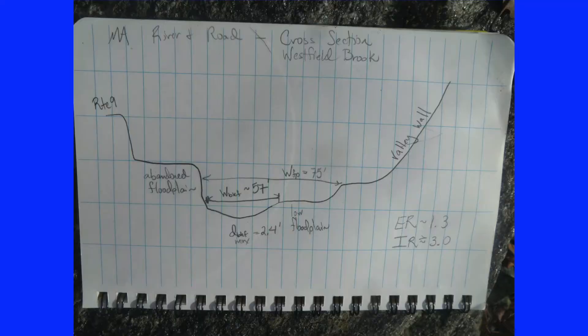Bankful events do the work of a stream. They are responsible for the erosion and the deposition within a stream. Bankful flow is the channel-forming flow, and bankful flow marks the transition between floodplain and channel processes.